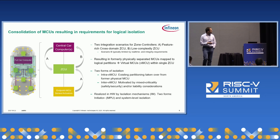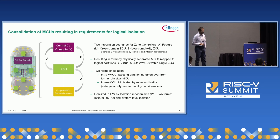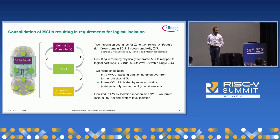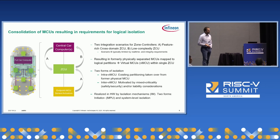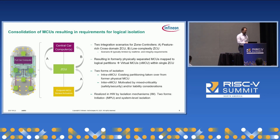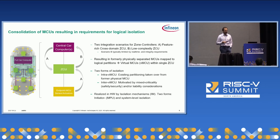Nevertheless, all the scenarios result in formerly physically separated MCUs being mapped to logical partitions — we term these so-called virtual MCUs, abbreviated VMCU, within a single zone control unit. We have on one hand inter-VMCU isolation requirements, meaning I take over an existing partition from a former physical MCU and integrate it into a ZCU and need to separate these. And then I have inter-VMCU separation scenarios, mostly motivated by different integrity requirements — for example, integrating an ASIL-B and an ASIL-D application into one controller, avoiding ASIL-D requirements rippling down to the ASIL-B partition, so I need freedom from interference.